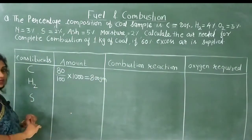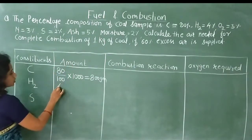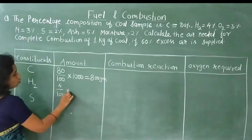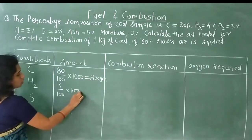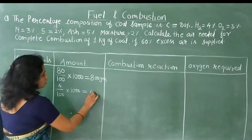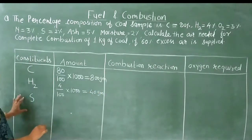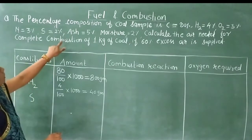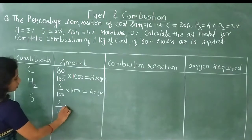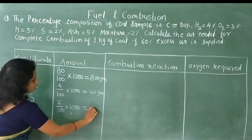Next, for Hydrogen: 4% is given, so (4/100) × 1000 = 40 g. Similarly for Sulfur: 2% is given, so (2/100) × 1000 = 20 g.